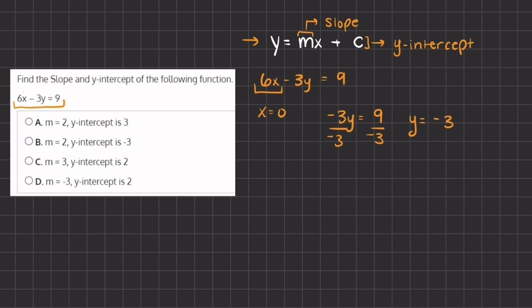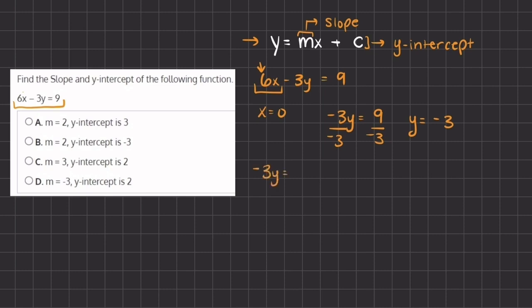So we know that our y-intercept equals negative 3. In order to find our slope, we need to find the coefficient of our x. Our coefficient here is 6, but because we are not in slope-intercept form we cannot say that the slope is 6. We have to simplify it into this form. We are going to subtract 6x on both sides and we are left with negative 3y equals negative 6x plus 9.